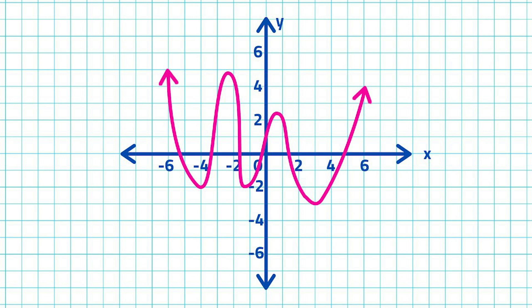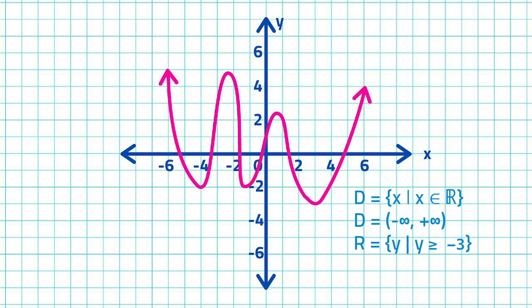The graph extends infinitely upwards. The domain is the set of all real numbers. Domain is the set of x such that x is an element of all real numbers. In interval notation, domain is from negative infinity to positive infinity. The lowest point in the graph is (3, -3) and all points on the graph are above this point. The range of the function is: range is the set of y such that y is greater than or equal to negative 3.